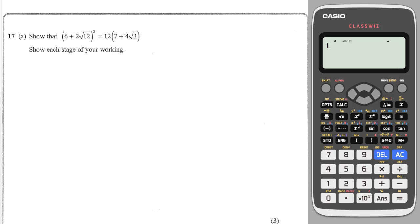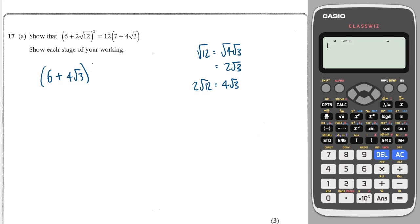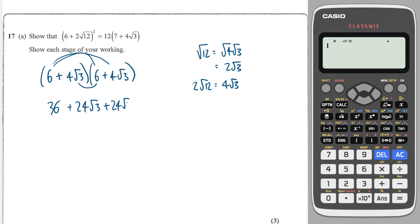Next question — show that this can equal this. Root 12 is root 4 times root 3, which is equal to 2 root 3. So 2 root 12 is equal to 4 root 3. Because it's a squared bracket, I'm going to times it by itself. I'm then going to get 36, that's going to give me 24 root 3, and another 24 root 3. And 4 times 4 is 16, and root 3 times root 3 is 3, so 16 times 3 is 48.